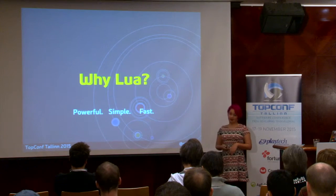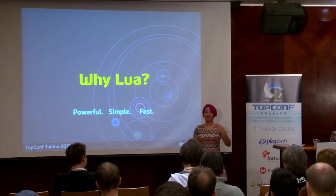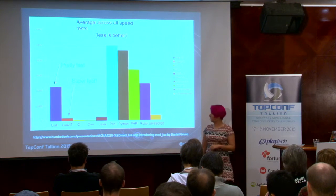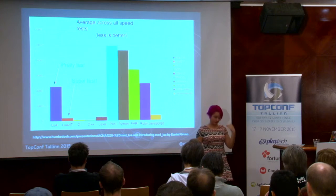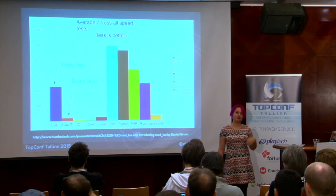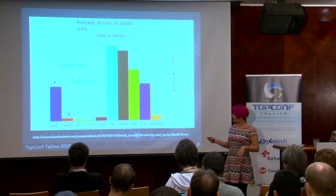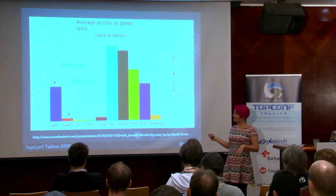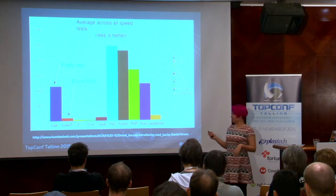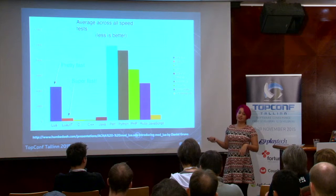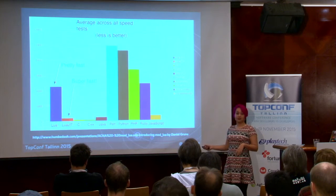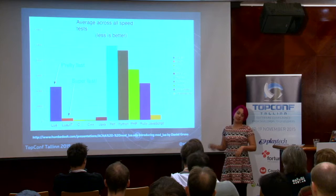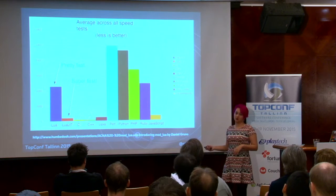Lua is also very fast — really, really fast. This chart shows the average of various speed tests on different algorithms such as pi digits and binary trees. As you can see, Lua performs better than other popular languages in the same family. Lua also has a just-in-time implementation that is ultra-fast — the closest thing you'll ever find to C while still being a dynamic scripting language.